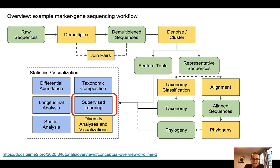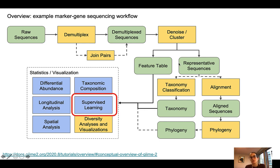On this slide here you can see an overview of a marker gene sequencing workflow. We don't need to go into all the details here. Important to note is that before we can employ supervised learning for sample classification, we need to process the raw sequence data and derive a microbial feature table from the data. Using this microbial feature table we can then derive information about the collected samples with supervised machine learning.